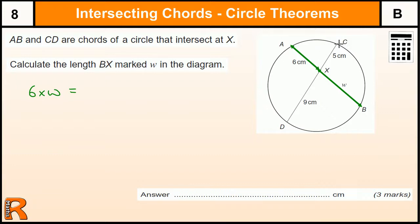So where C to X and X to D, we have 5 times 9. So that's 45, and this is 6W, so W is going to be 45 divided by 6.